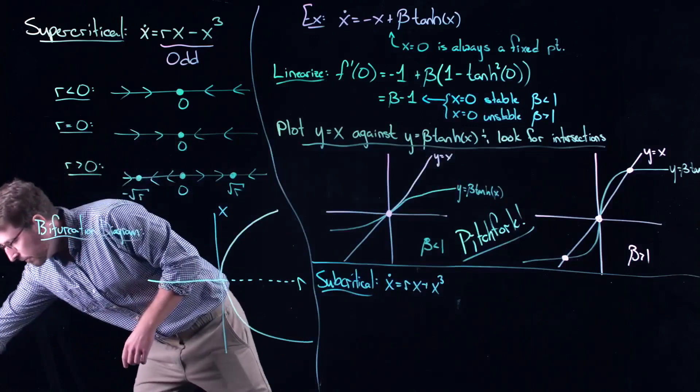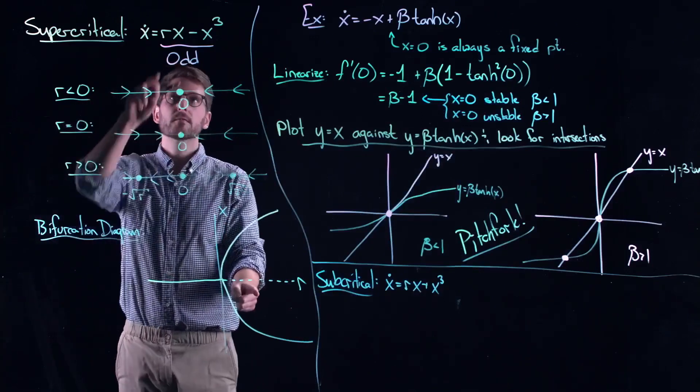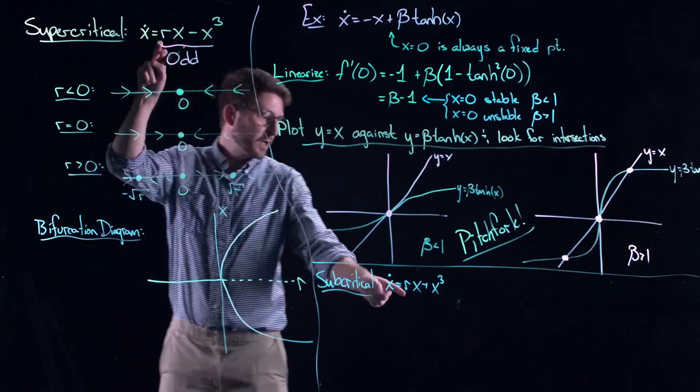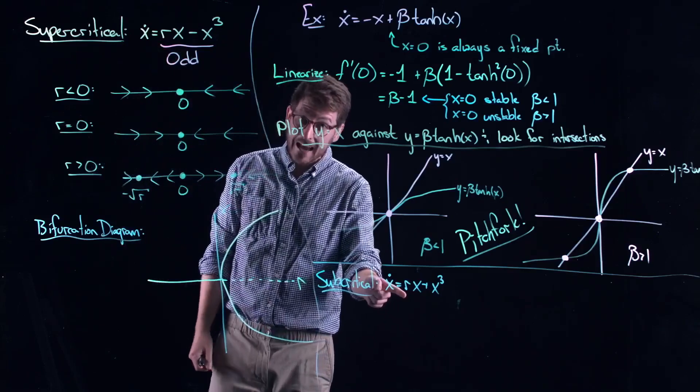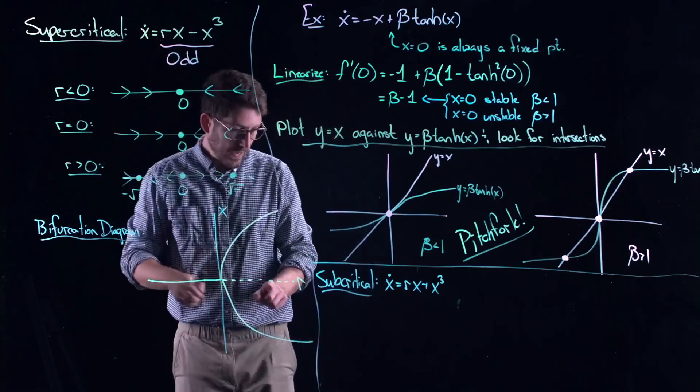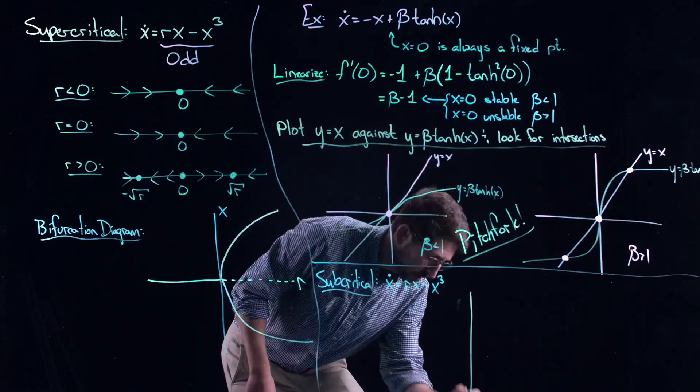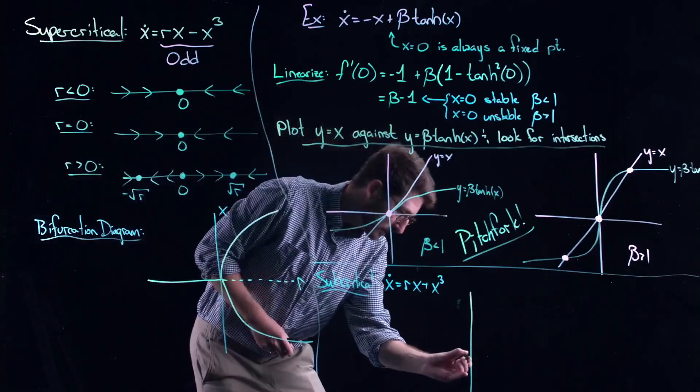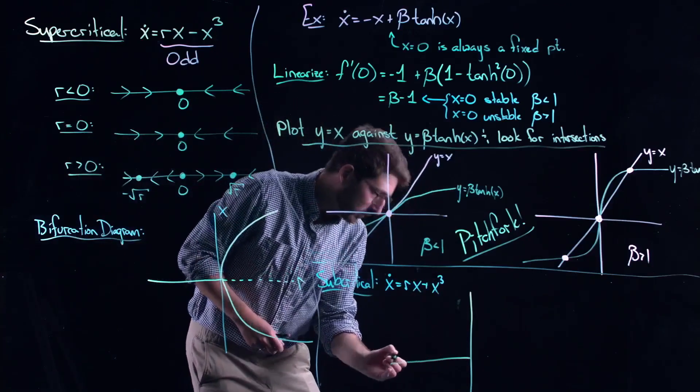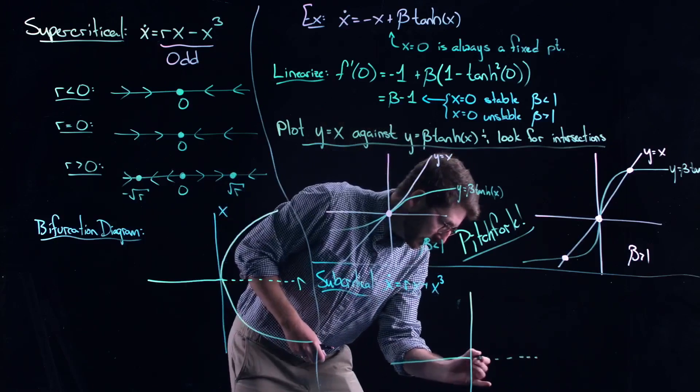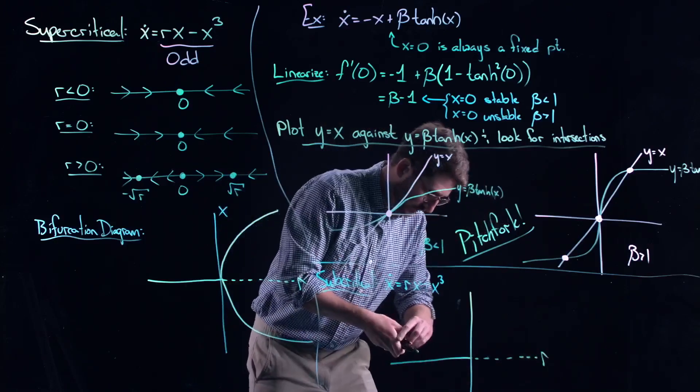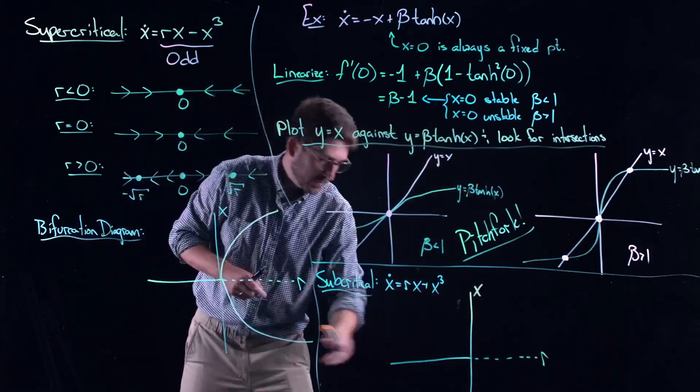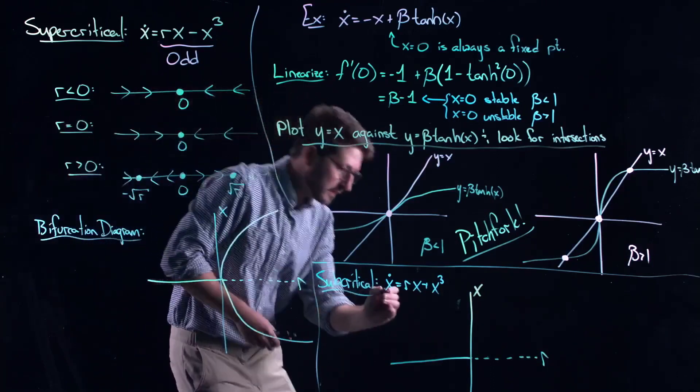If I change the sign of this thing, then the bifurcation diagram flips. So remember, I have multiple roots when r is positive. Now, if I change the sign here, I have multiple roots when r is negative. And essentially what you get is a bifurcation diagram that looks like this. You still have x equal to zero being stable when r is negative and unstable when r is positive.